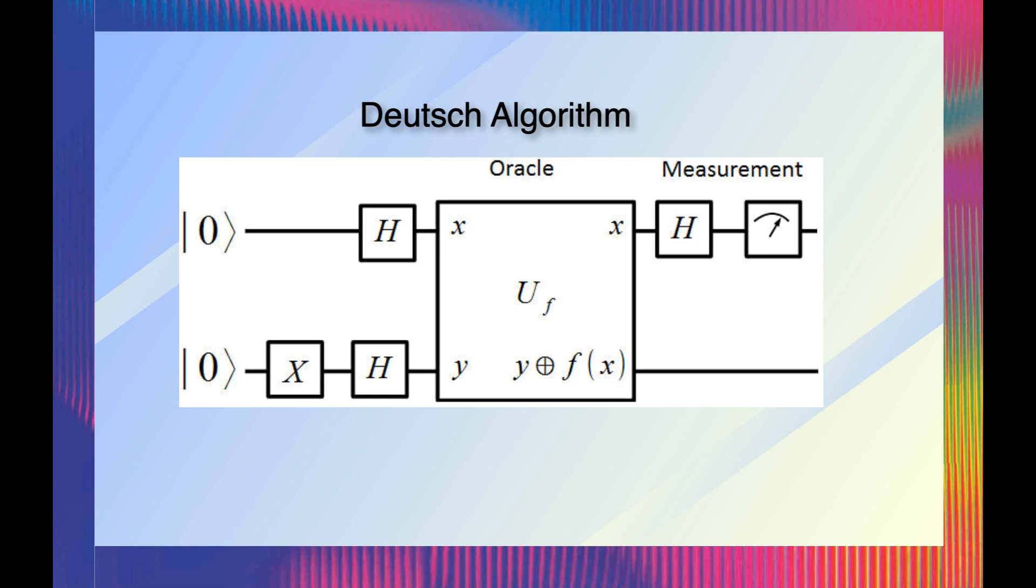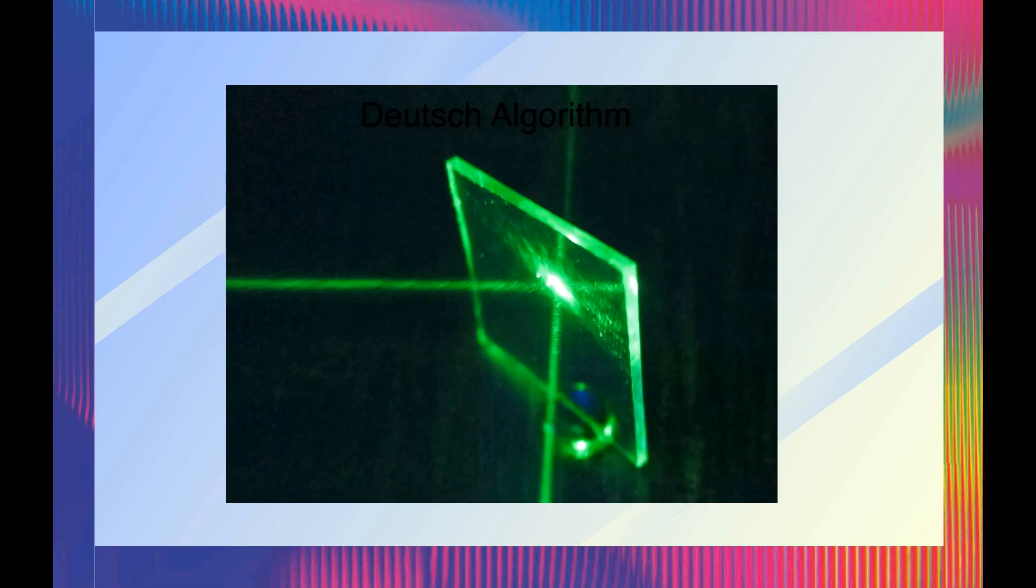If quantum interference is the heart of quantum computing, then there is one physical system that has the ultimate simplicity that may yet inspire future generations of physicists to invent future impossible things: the quantum beam splitter.